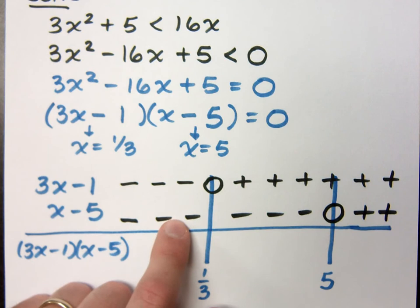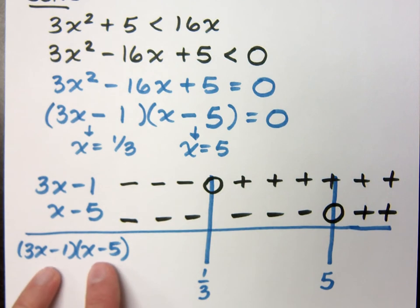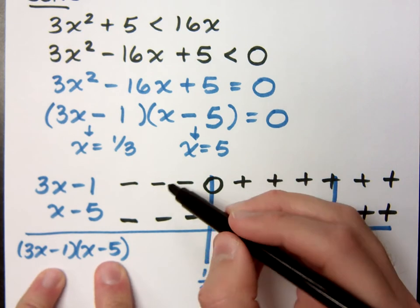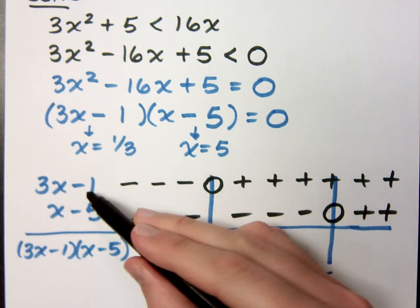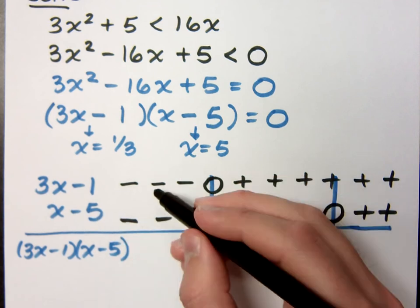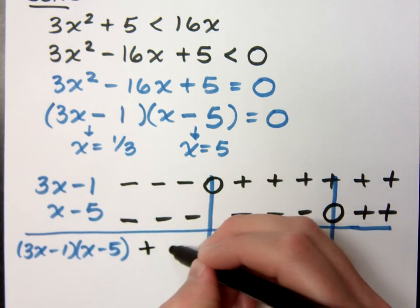Now, why am I doing these signs? Because that tells me what the sign will be when I multiply these. Because if on this side of 1/3, I have negatives from this guy and negatives from that, negative times negative becomes positive.